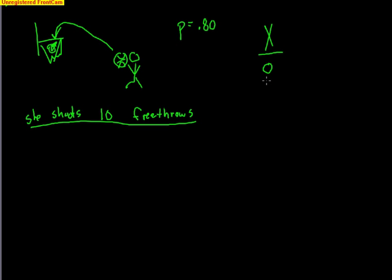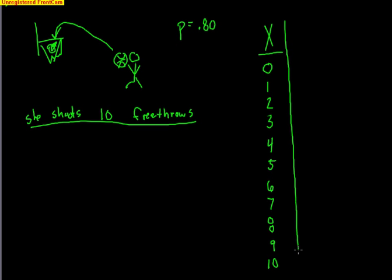She could make none, or she could make one, two, three, four, five, six, seven, eight, nine, or all 10. A probability model lists all the different outcomes that could happen. So X is the random variable — how many free throws she makes — and next to it we need the probability of each outcome. Capital X represents the idea of how many she makes; little x is the individual outcomes: zero through ten.